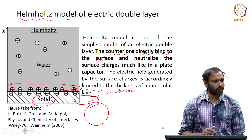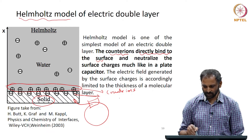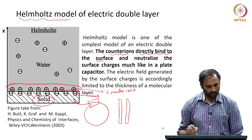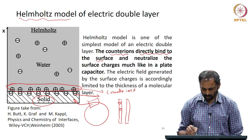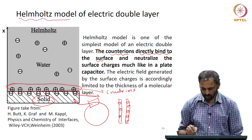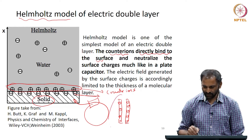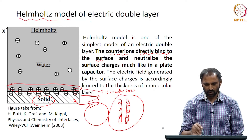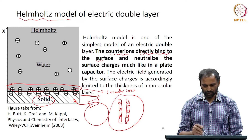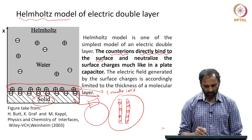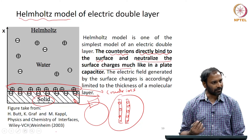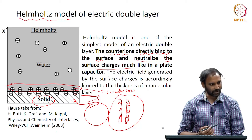In this Helmholtz model, what is assumed is that the counter ions are directly bound or attached to the particle surface, and they neutralize the charges on the surface, giving an arrangement which looks more like a capacitor — two oppositely charged plates. So in this double layer model, the counter ions are directly bound to the surface, they neutralize the surface charge, and give an arrangement which looks like a capacitor.